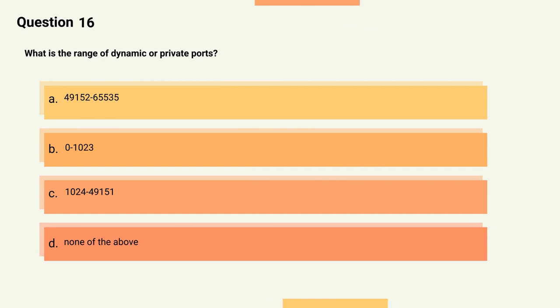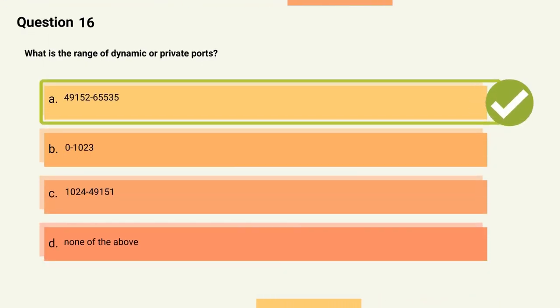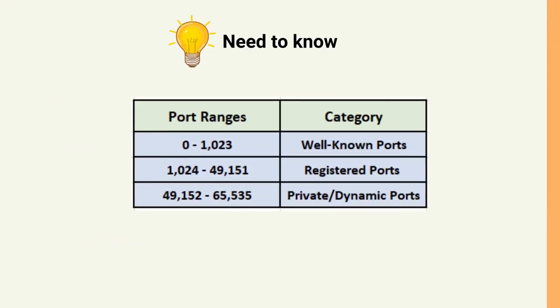Question 16: What is the range of dynamic or private ports? Options: A) 49152–65535, B) 0–1023, C) 1024–49151, D) None of the above. The correct answer is Option A, 49152–65535. Explanation: Dynamic or private ports fall in the range of 49152–65535 and are used whenever a service is requested that is associated with well-known or registered ports.